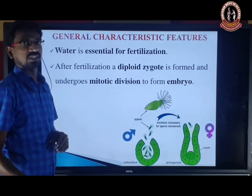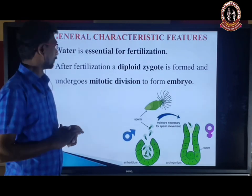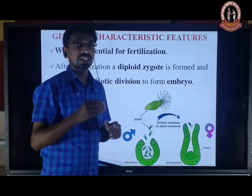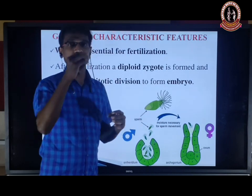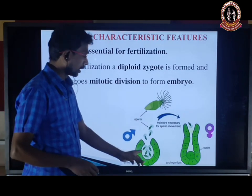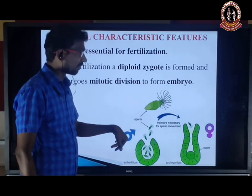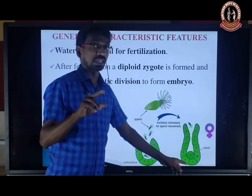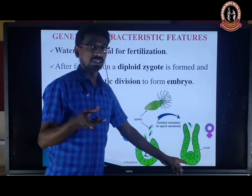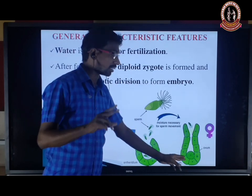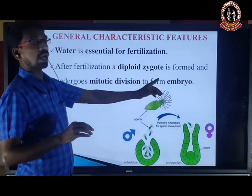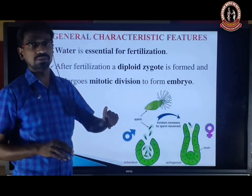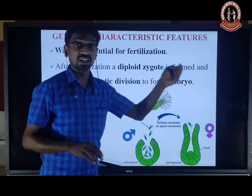Water is essential for fertilization, like in Bryophytes. The antherozoids are released and swim through water to reach the egg. Fertilization — the fusion of male and female gametes — forms the diploid zygote. The zygote undergoes repeated mitotic division to form the embryo. This embryo differentiates into root, stem, and leaves. Since embryo formation occurs in Pteridophyta, it is called Embryophyta.